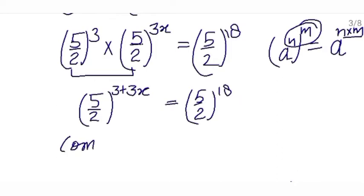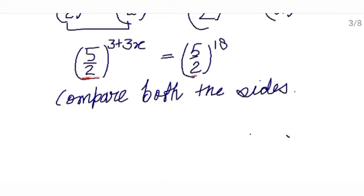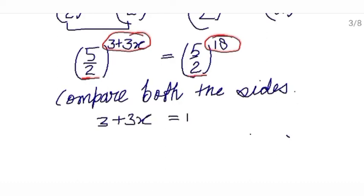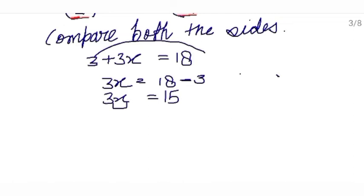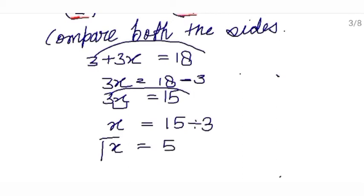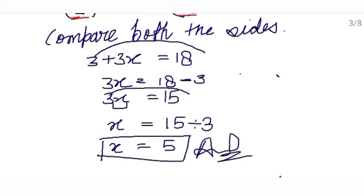Now compare both sides. Bases are same on both sides, so powers will be equal. So keep them equal: 3 plus 3x equals 18. Move this 3 to the other side: 3x equals 18 minus 3, so 3x equals 15. But you want to find the value of x. 3x means 3 multiply x, so when this 3 moves to the other side it will be division. You get 3 fives are 15, so value of x is 5. This is your answer.